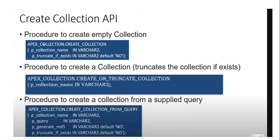Now, the Create Collection API — how to create an API for collections in APEX. First, to create an empty collection, use the procedure apex_collection.create_collection, passing the collection name variable and p_truncate, which truncates an already-existing collection in your APEX session.